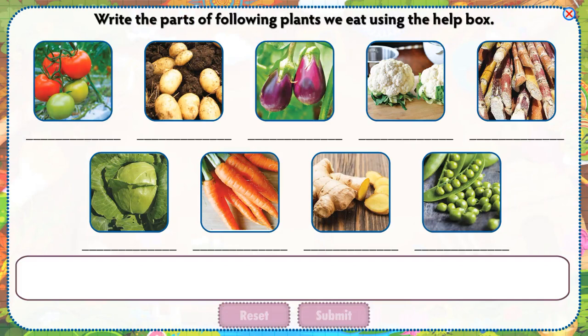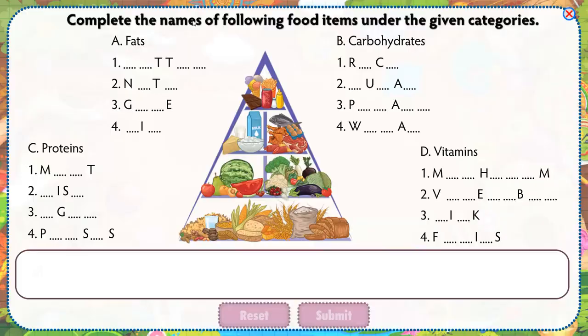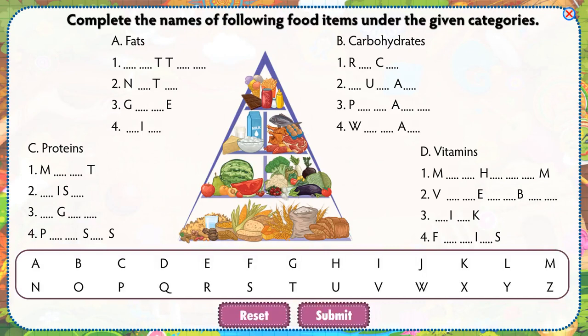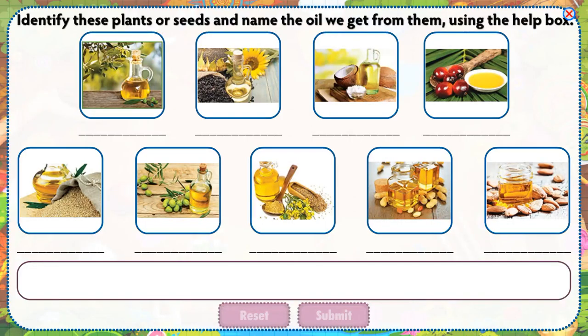Write the parts of following plants we eat using the help box. Complete the names of following food items under the given categories. Identify these plants or seeds and name the oil we get from them using the help box.